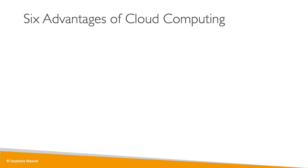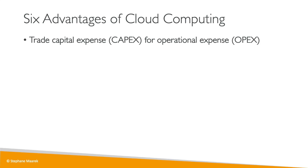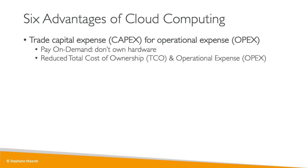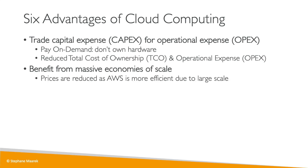Now the six advantages of cloud computing. First, we trade capital expenses for operational expenses — CapEx for OpEx. You don't own hardware; you pay on demand, which reduces your Total Cost of Ownership (TCO) and operational expenses. You don't buy hardware in advance — you rent it from AWS. Second, we benefit from massive economies of scale. Because so many customers use AWS, AWS becomes more efficient at scale and reduces prices over time.